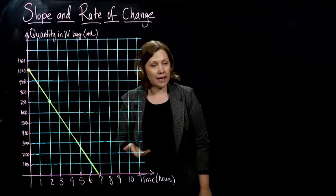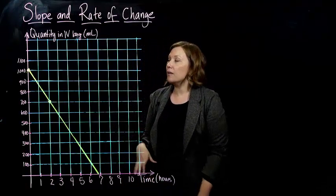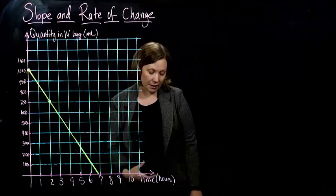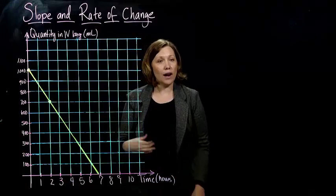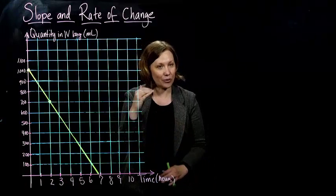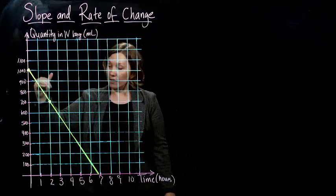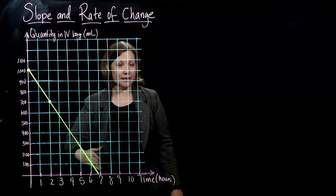But it's really the same idea. We can still find the slope of it. This happens to be quantity in an IV bag in milliliters over time. So what happens to an IV bag? It drains. It goes down over time.